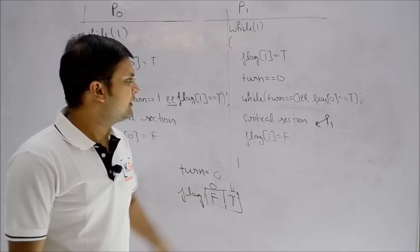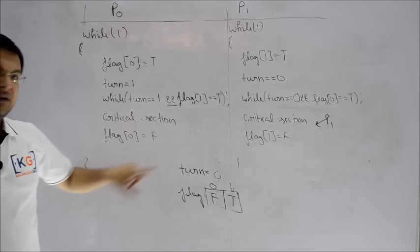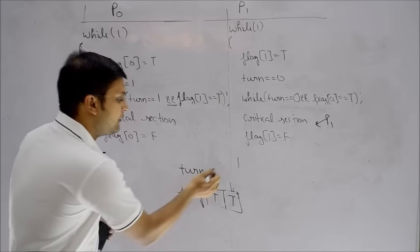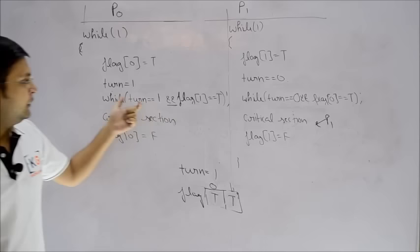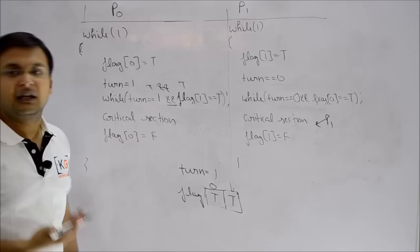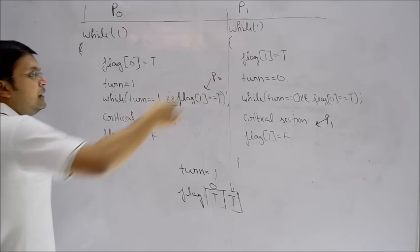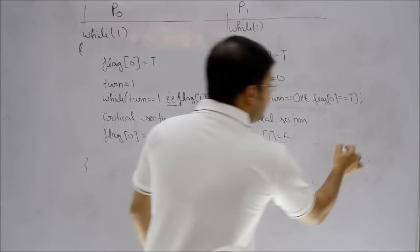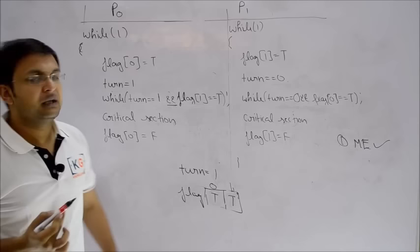Let's try one more case. Suppose P0 tries to enter the critical section again: flag[0] = true, and turn is set to 1. Check: turn == 1 is true, and flag[1] is true — so both conditions are true. True AND true is true, so P0 keeps looping and cannot enter the critical section. Mutual exclusion is confirmed across all tested cases.